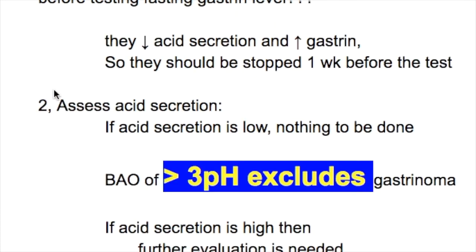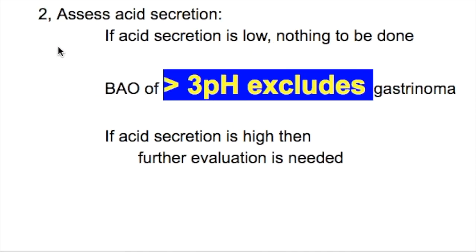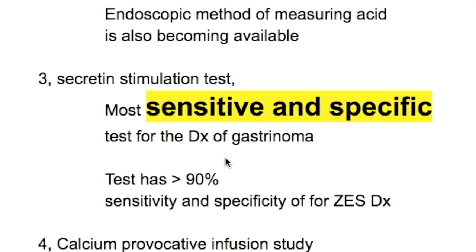Proton pump inhibitors (PPIs) should be stopped one week before testing fasting gastrin levels because PPIs decrease acid secretion and increase gastrin. Assess acid secretion: if acid secretion is low, the diagnosis is excluded. A basal acid output pH of more than 3 excludes the diagnosis of gastrinoma. If acid secretion is high, further evaluation is needed. Endoscopic methods of measuring acid are also becoming available.